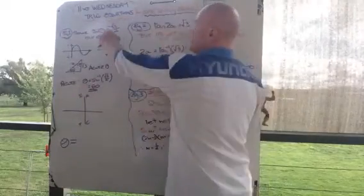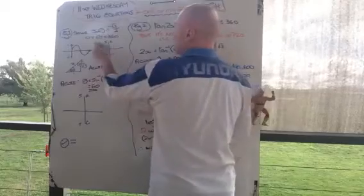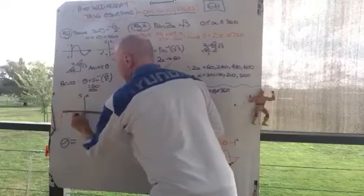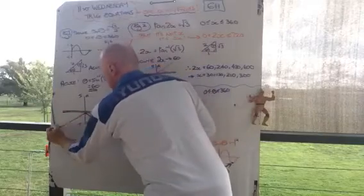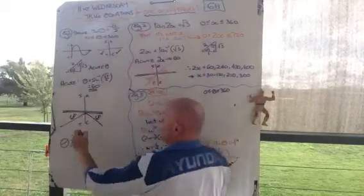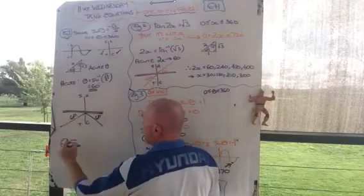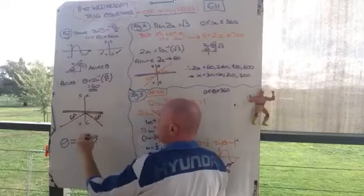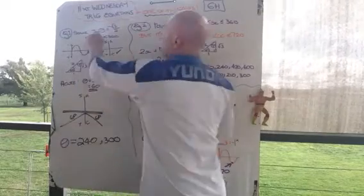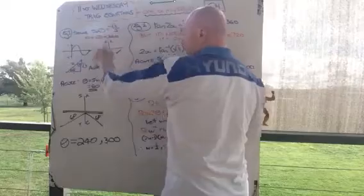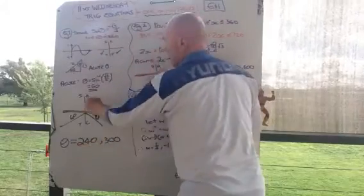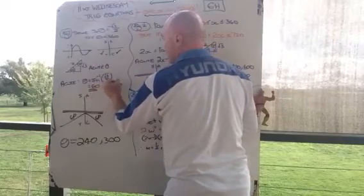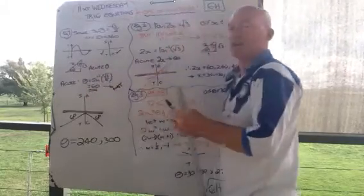But, this says minus root 3 on 2, so I'm in that quadrant and that quadrant. So, make your line heavy, go down there 60, and go down there 60. So, that means theta is 180 plus 60, so 240, and theta is 360 minus 60, which is 300. So, sine theta equals minus root 3 on 2 has two solutions in the third and fourth quadrants, 240 and 300. That is not a solution. It's just the acute value.